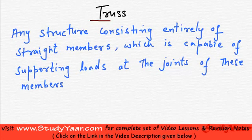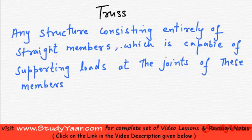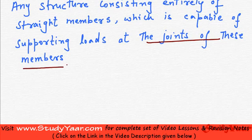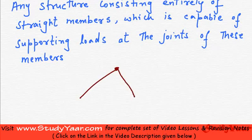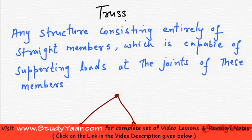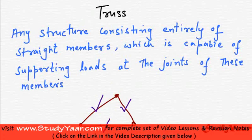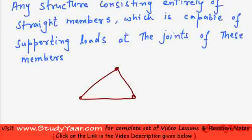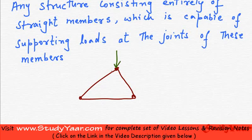Let us understand what is a truss. We define a truss as any structure which consists primarily of straight members and is capable of supporting loads at the joints of these members. So this is any structure consisting entirely of straight members which is able to support loads at the joints. Such a structure is known as a truss.